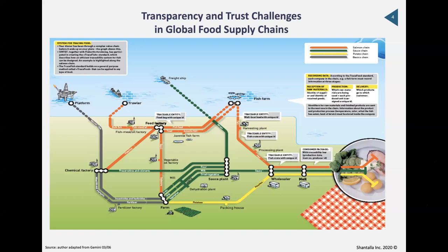If you look at the complexity of the fish supply chain — the orange line — there's much more involved. Our supply chain is global, with many countries, many different languages, thousands of different technologies, and small holders who may not use any technology at all. We also have different regulations and different interpretations of transparency. In some countries, transparency may be seen as a threat — we may assume transparency is goodness, but unfortunately that's not the case in some regimes around the world.